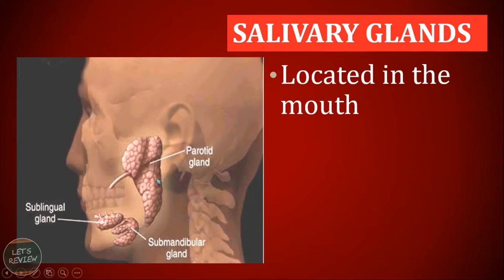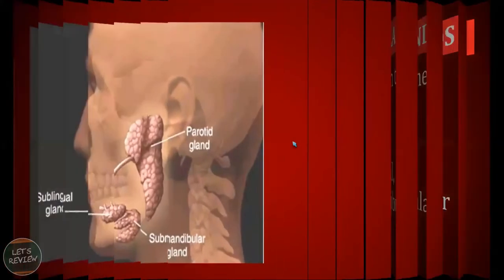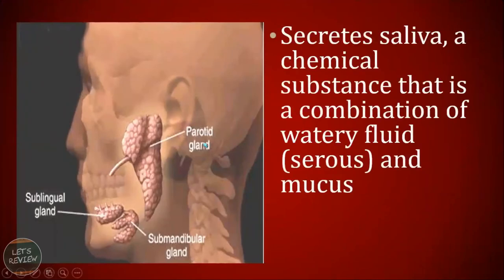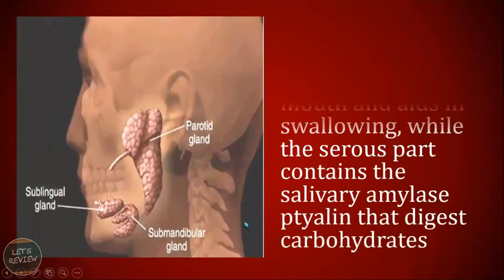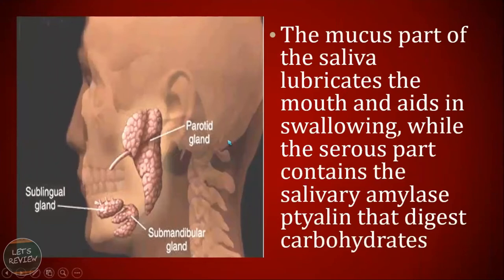We have the salivary glands, located in your mouth — there are three: the sublingual, the submandibular, and the parotid gland. They secrete saliva, a chemical substance that is a combination of watery fluid called serous fluid and mucus. In one day, we produce approximately one liter of saliva. The mucus part of the saliva lubricates the mouth and aids in swallowing, while the serous part contains salivary amylase, also called ptyalin, which digests carbohydrates.